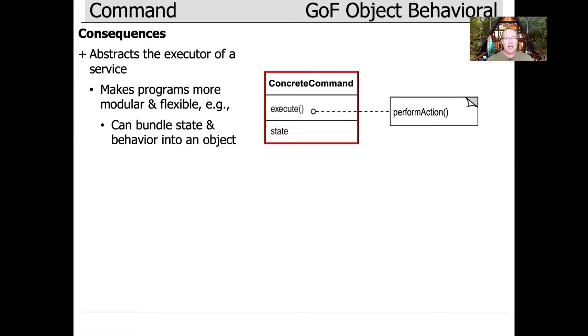You can bundle the state and behavior into an object. For example, if you're doing a GUI program, you can have menus that are commands, and you can make those commands easily pluggable. They all have an execute method, and when you want to run the menu item, you just execute the command stored at that location.